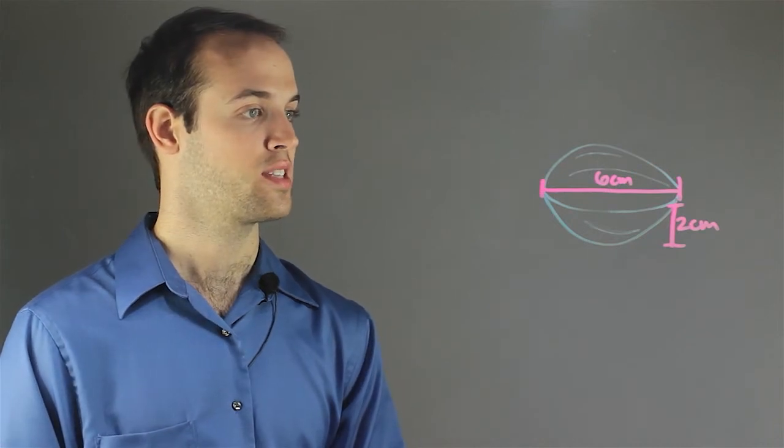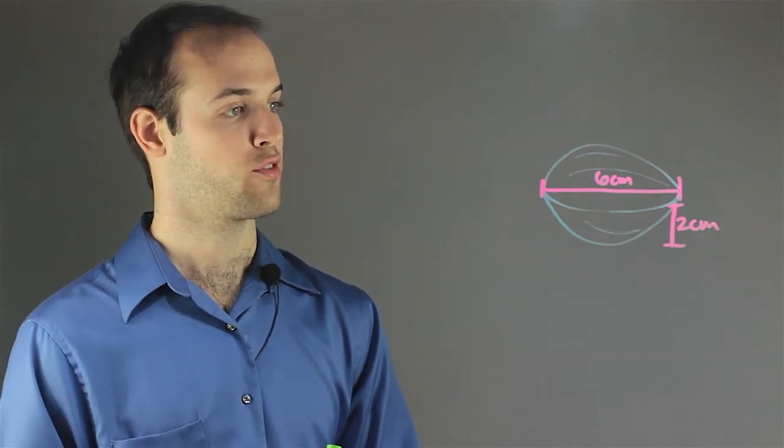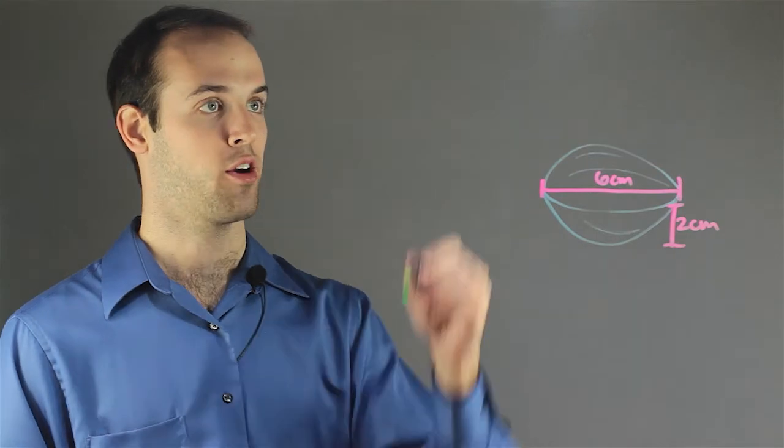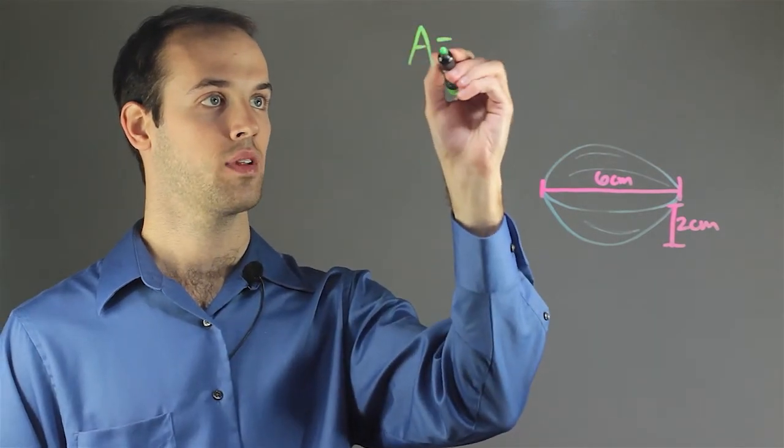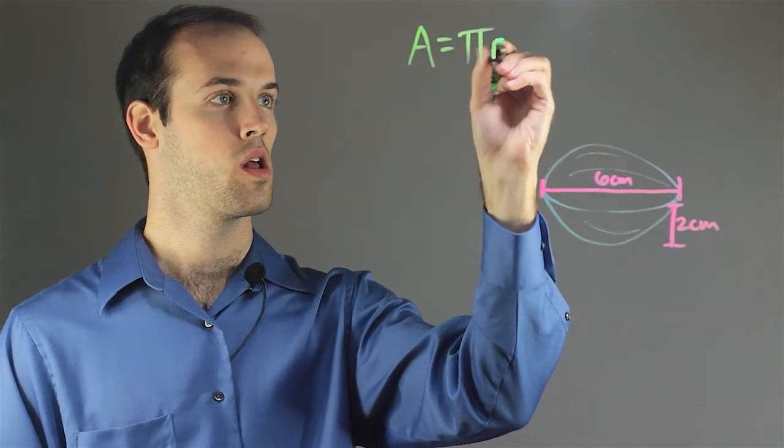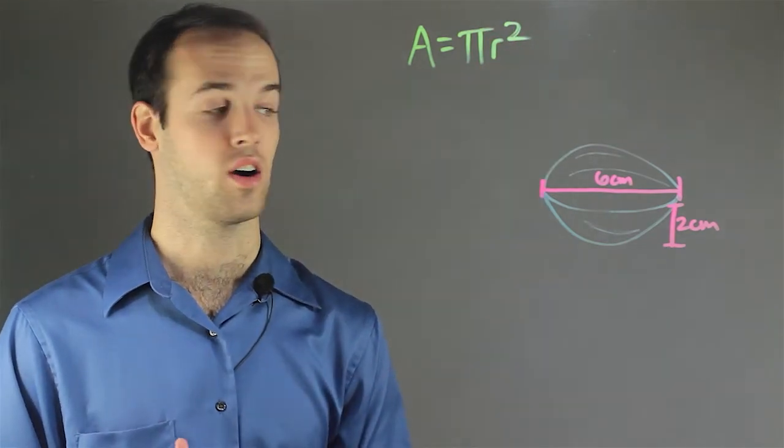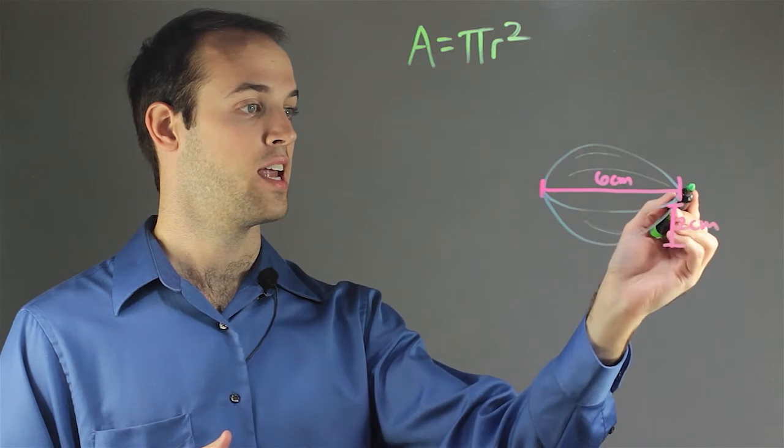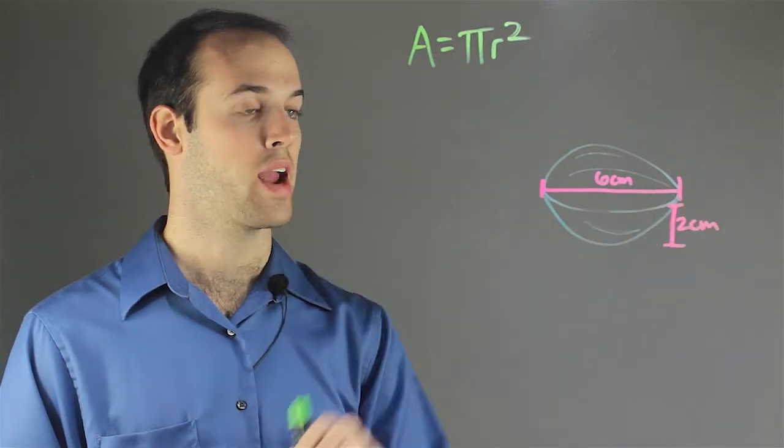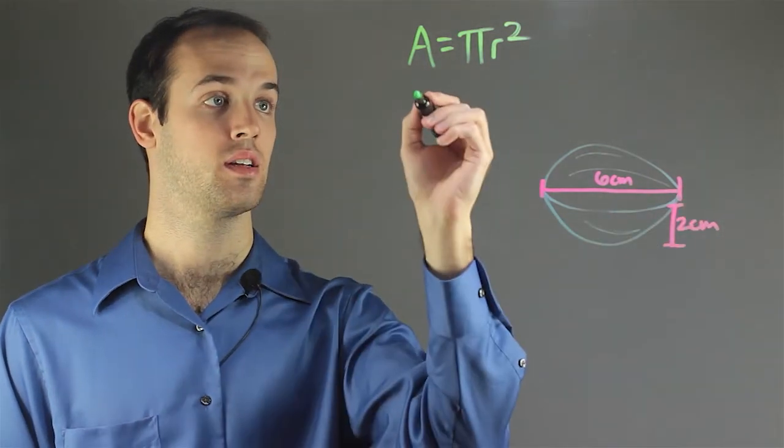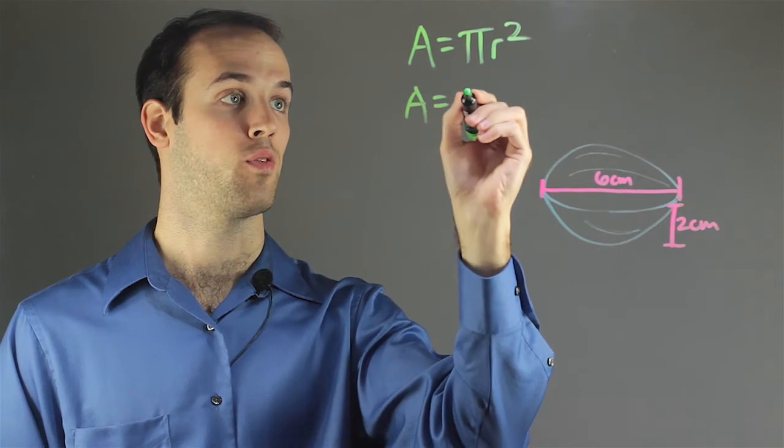So this clamshell looks like a circle if you were to look at it from above, so I'm going to use the area formula for a circle. And the only unknown that I'm going to need to plug in for is r. And I know that if it's 6 centimeters at the widest point that means the radius must be 3 centimeters. So I'm going to plug in 3 for r.